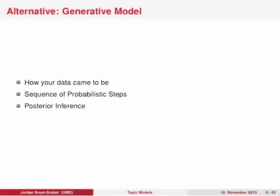What we're going to do instead is assume a probabilistic model. Just like the translation models we talked about two weeks ago, this assumes you have a story about how your data came to be, told using the language of probability. There are some missing steps in that story that you need to fill in using posterior inference. These missing steps correspond to latent variables that aren't explicitly observed.